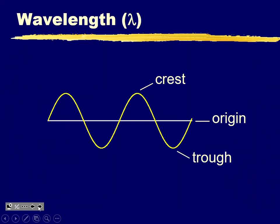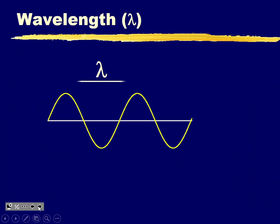The crest is the top of the wave, the trough is the bottom, and the middle is the origin. Wavelengths go from crest to crest or trough to trough — that's the easiest way to measure them. You could also think of it as one full oscillation.